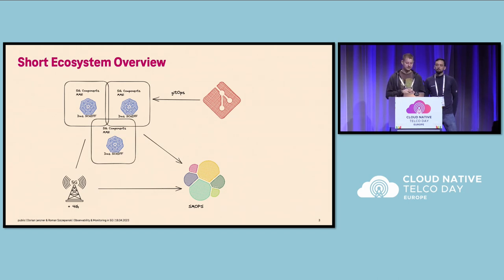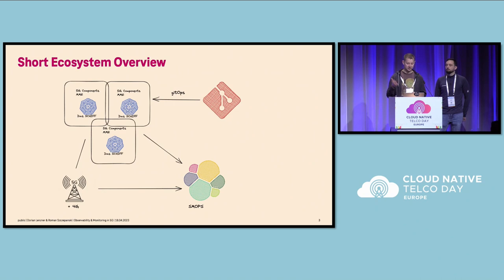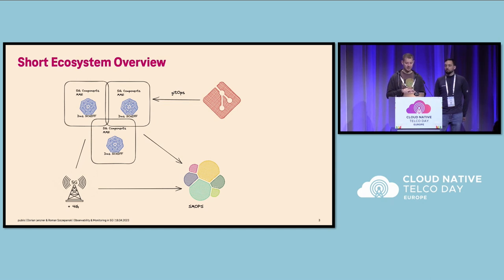Here you can see our ecosystem. There are multiple clusters from Das Schiff. We not only have 5G components but also the good old 4G — it's called MME — and we want to support our customers there as well. Everything is deployed via GitOps. There is a central instance called SMOPS where we push metrics, logs, and everything else. Underneath there's Elastic as an environment to analyze that data.